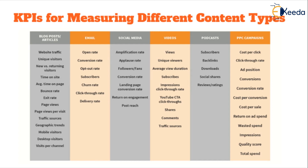For podcasts, you can measure number of subscribers, number of backlinks leading to the podcast as an indicator of promotion effectiveness, and number of downloads — which tells you what percentage of subscribed customers are actively accessing the content. Number of social shares indicates whether customers found the intended value and were engaged enough to share it on social media platforms. You can also track reviews and ratings, giving insight into what your next move should be for developing similar content.